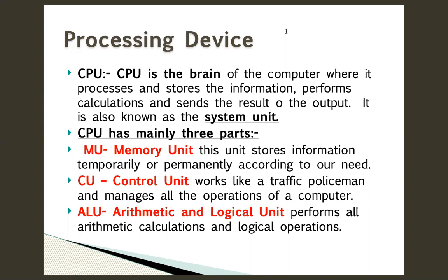The Control Unit works like a traffic police and manages all the operations of a computer. All your jobs are controlled by the Control Unit, and it works so fast it does not create any traffic. If at a time you open three or four applications, it will immediately open them very fast because it has control over which application to open first.